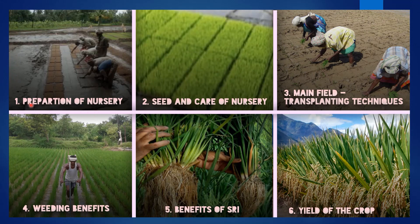The topics covered are: first, preparation of nursery — how to prepare the nursery for SRI method. Second, seed and care of nursery — how to protect the nursery and in which stage to transplant to the main field. Third, main field transplanting techniques. Fourth, weeding benefits in SRI method. Fifth, benefits of SRI. And sixth, yield of the crop.